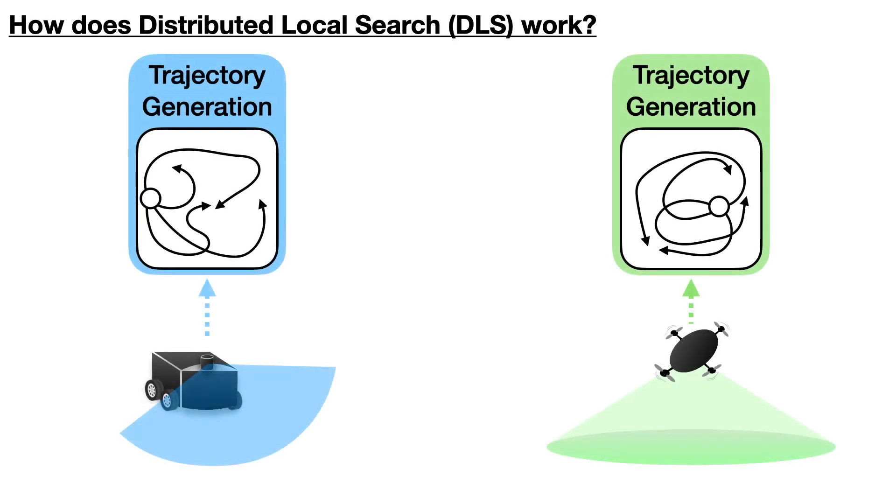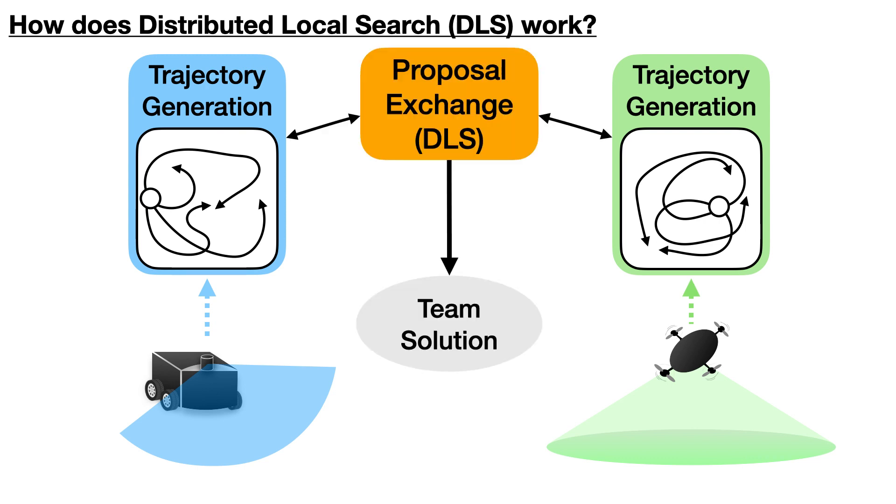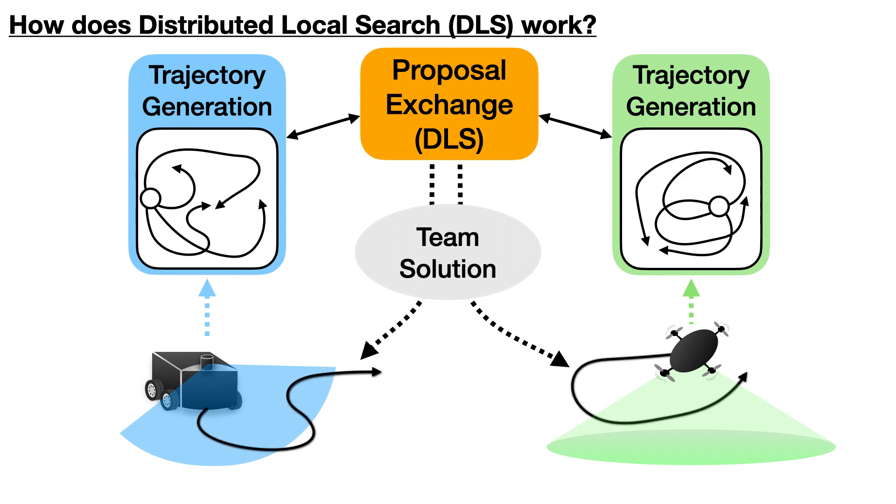Our algorithm works by letting robots first generate candidate trajectories and then build a team plan by proposing modifications to it. Three types of proposals are possible as long as they improve the team objective by a sufficient amount. This procedure finds two possible solutions, and the better one will be adopted by all robots.